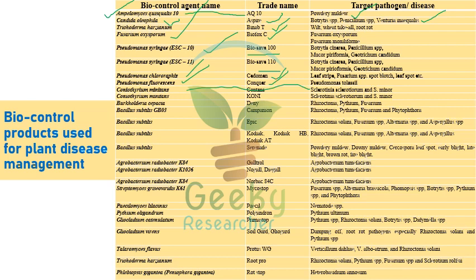Coniothyrium minitans, trade name Contans, is recommended against Botrytis, Sclerotinia sclerotiorum, and Sclerotinia minor. Burkholderia cepacia, trade name Deny, is recommended against Rhizoctonia, Pythium, and Fusarium species. Bacillus subtilis has various trade names including Companion, Epic, Kodiak, and Serenade.